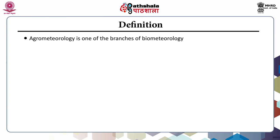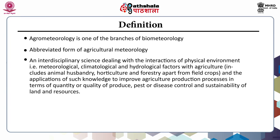Agrometeorology is one of the branches of biometeorology and is the abbreviated form of agricultural meteorology. It is an interdisciplinary science dealing with the interactions of the physical environment — that is meteorological, climatological, and hydrological factors — with agriculture, including animal husbandry, horticulture, and forestry apart from field crops, and the application of such knowledge to improve agricultural production in terms of quantity or quality of produce, pest or disease control, and sustainability of land and resources.